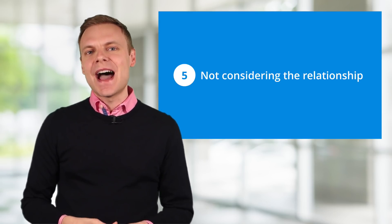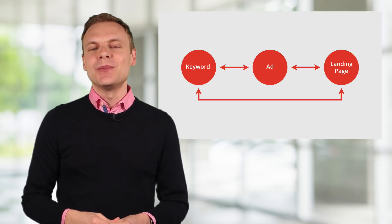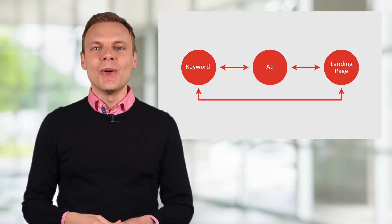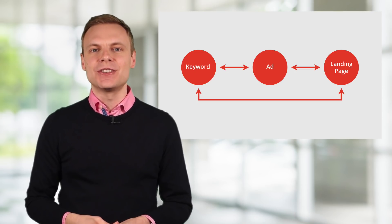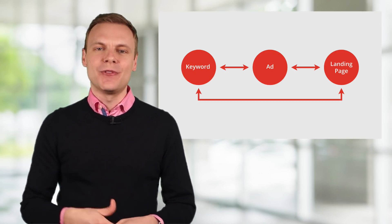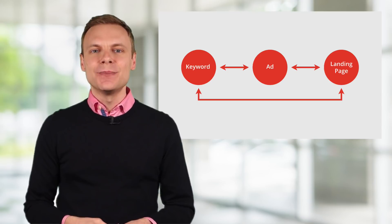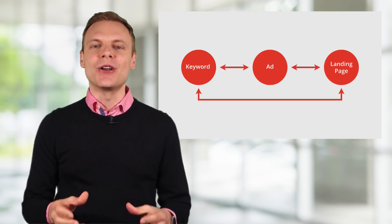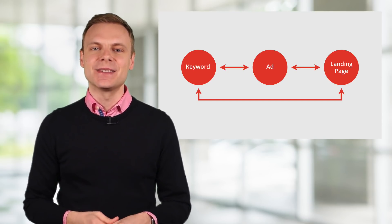Mistake number 5 is not considering the relationship. It's important to consider all these elements — the keyword, the ad, and the landing page. The better the relationship between these elements, the better the performance of your campaigns. It's simple, it's logical, but it's often overlooked, and not just by beginners.